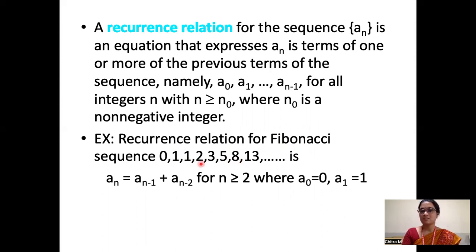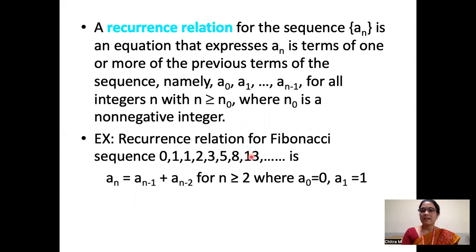How are we getting these terms? If we observe, the 5th term is the addition of the 3rd and 4th terms — that is, 1 plus 2 equals 3. If we take the 6th term, which is 5, it is the addition of 2 and 3. That's how we get terms in the Fibonacci sequence. In general, any particular term is the addition of the previous two terms. So we can write A_n as A_{n-1} plus A_{n-2}.